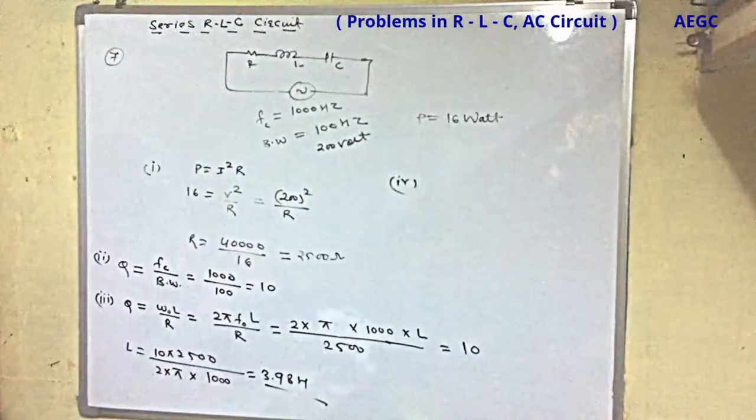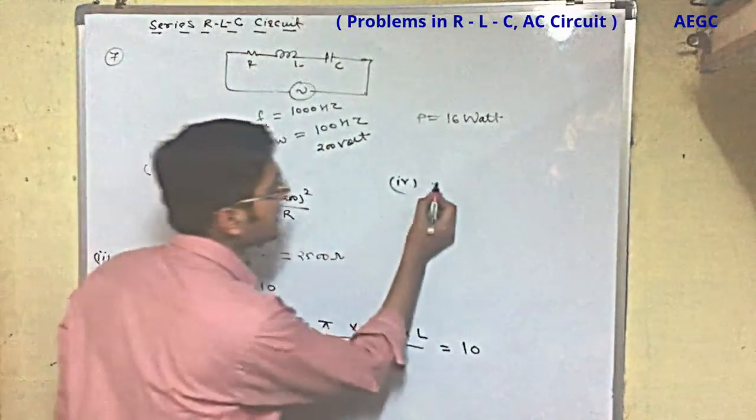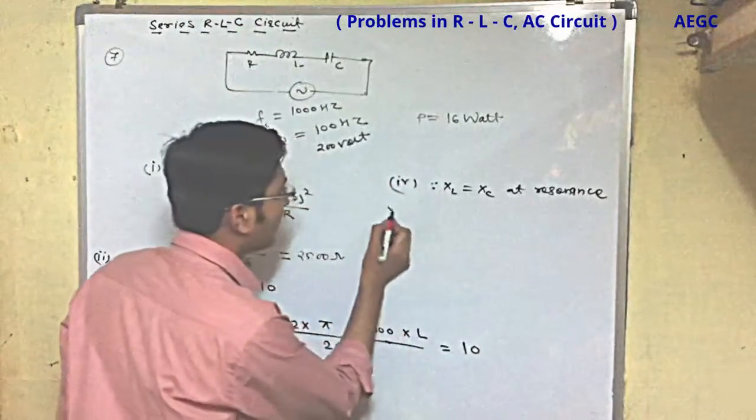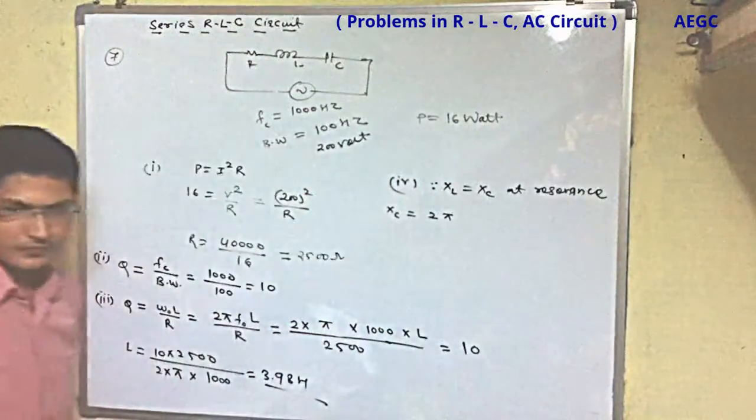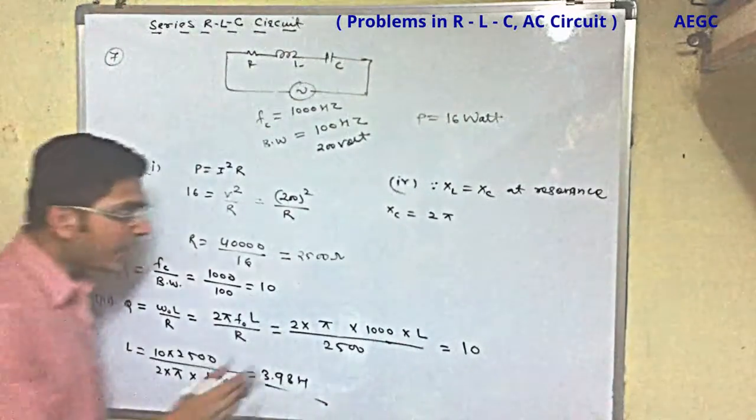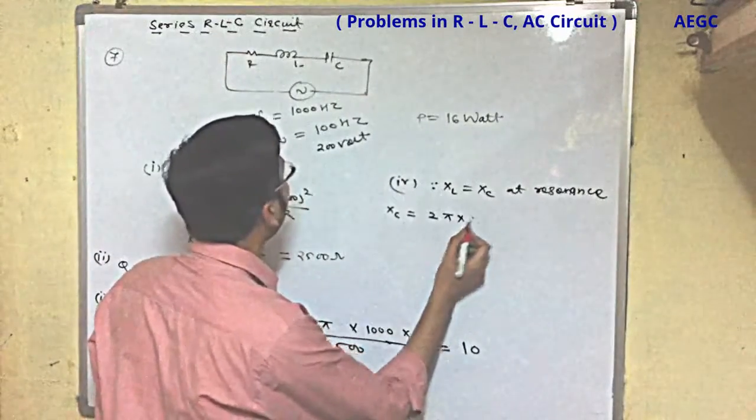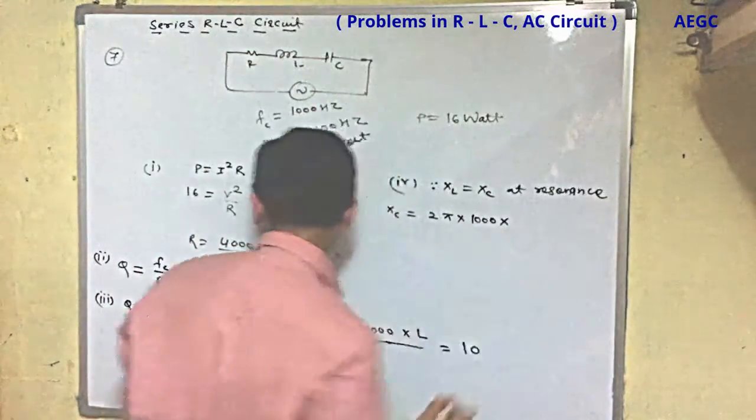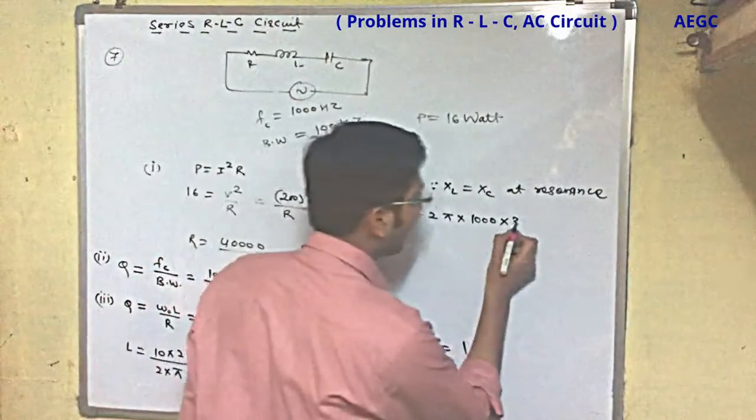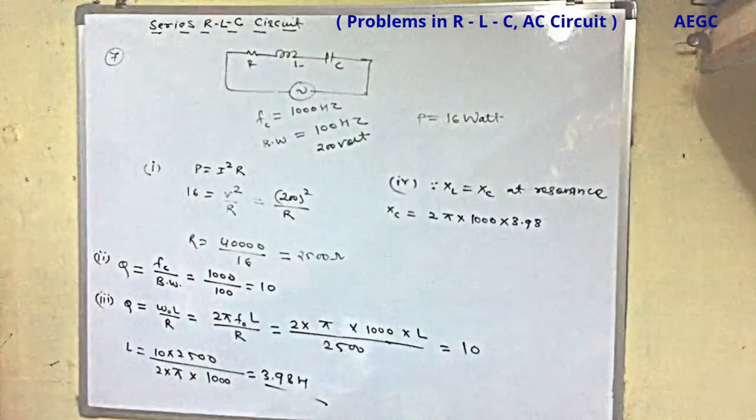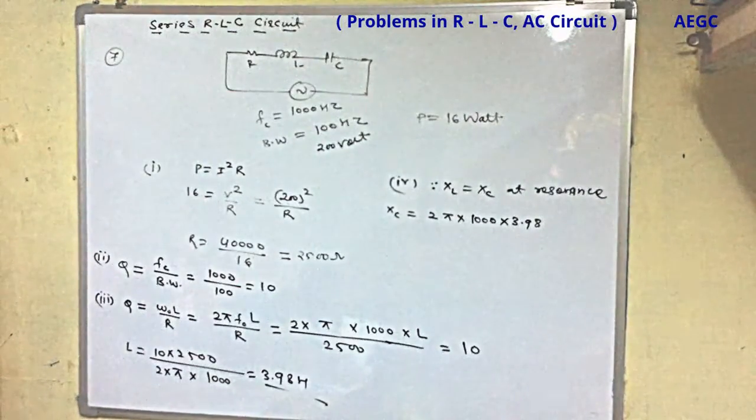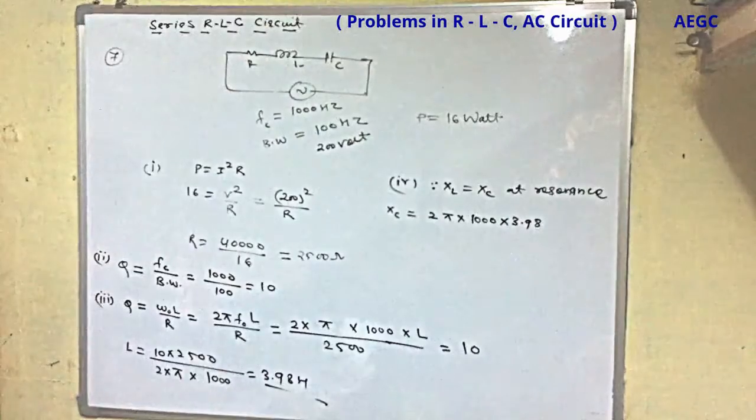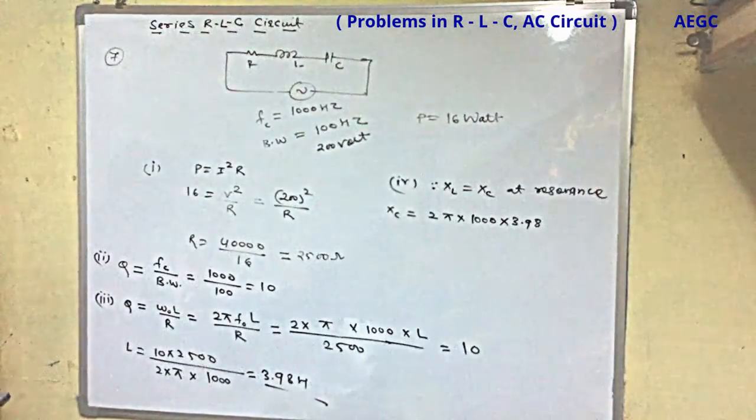XL will be equal to XC since XL equals XC at resonance. XC will be equal to 2π f L. What is the frequency? The resonating frequency. We solve it: XC = 2π × 1000 × 3.98. It comes out to be 25000.0775 ohms.